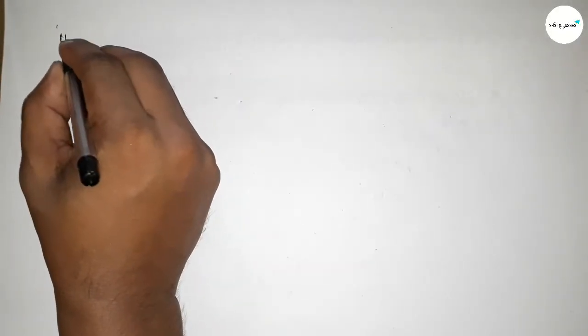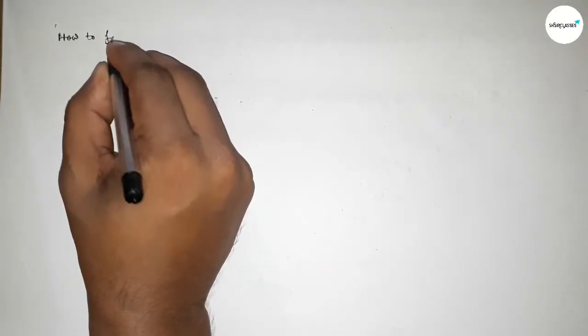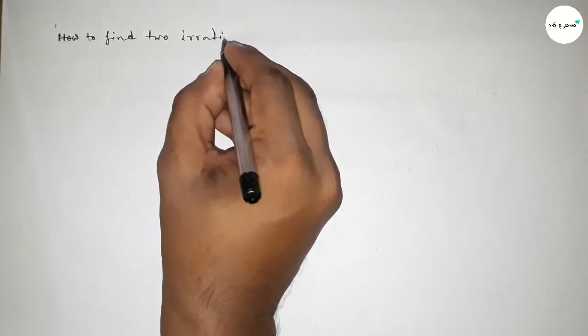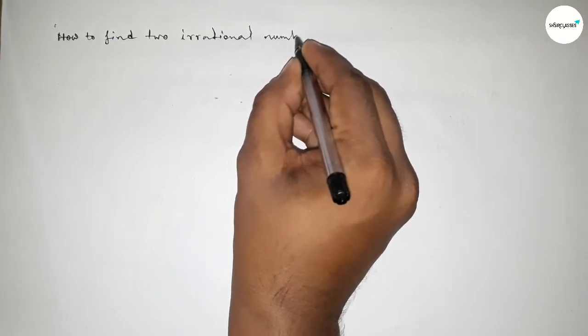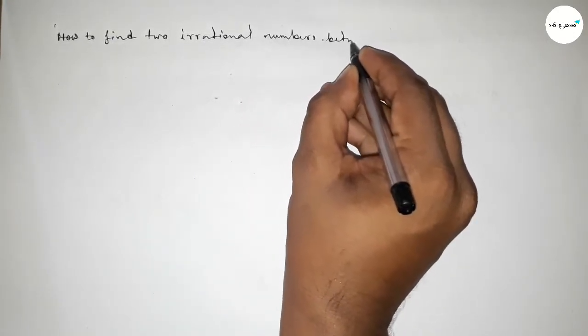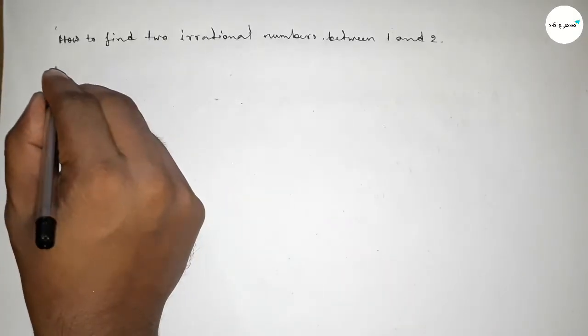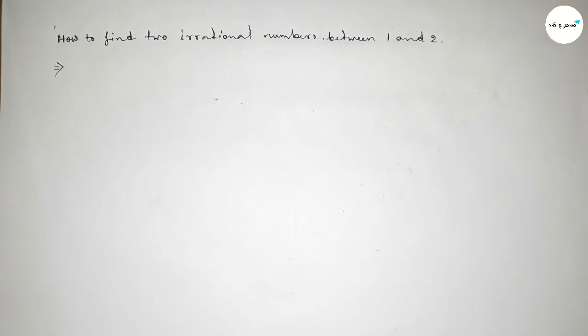Hi everyone, welcome to SI Share Classes. Today in this video we're discussing how to find two irrational numbers between 1 and 2. So let's start the video. First of all, let's solve this problem. So now I'm going to find out two irrational numbers between 1 and 2 using this method.